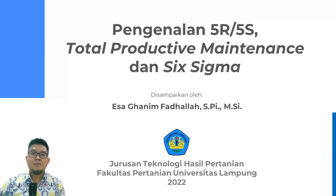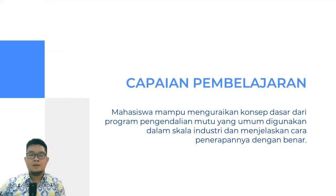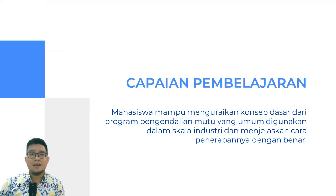Pada hari ini kita akan membahas salah satu topik tentang program pengendalian mutu yang umum diterapkan di industri, yaitu tentang 5R atau 5S, Total Productive Maintenance, dan Six Sigma. Capaian pembelajaran pada materi hari ini adalah mahasiswa mampu menguraikan konsep dasar dari program pengendalian mutu yang termasuk 5R, TPM, dan Six Sigma yang umum digunakan dalam skala industri, dan dapat menjelaskan cara penerapannya dengan benar.